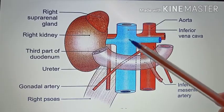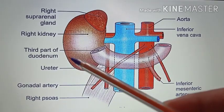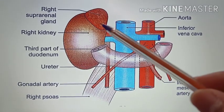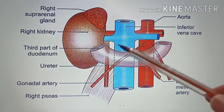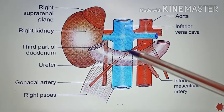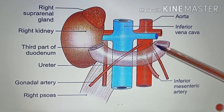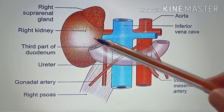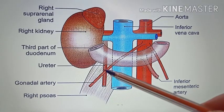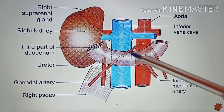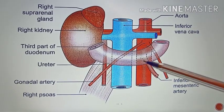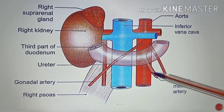In this picture you can see the right kidney, the right suprarenal gland, the inferior vena cava, the aorta, the third part of the duodenum, the ureter, the gonadal vessels, and the inferior mesenteric artery.